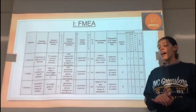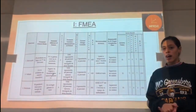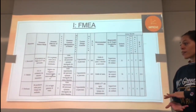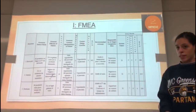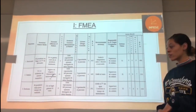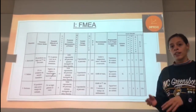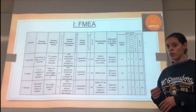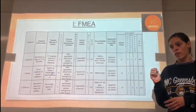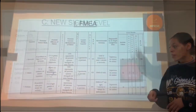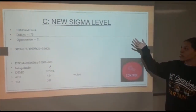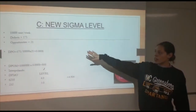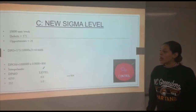Finally, we have the cooling of the jar after the jam has been sealed in. This allows the jam to solidify and achieve a jam-like texture rather than remaining liquid. Now we have a new sigma level, still based on 10,000 units per week.